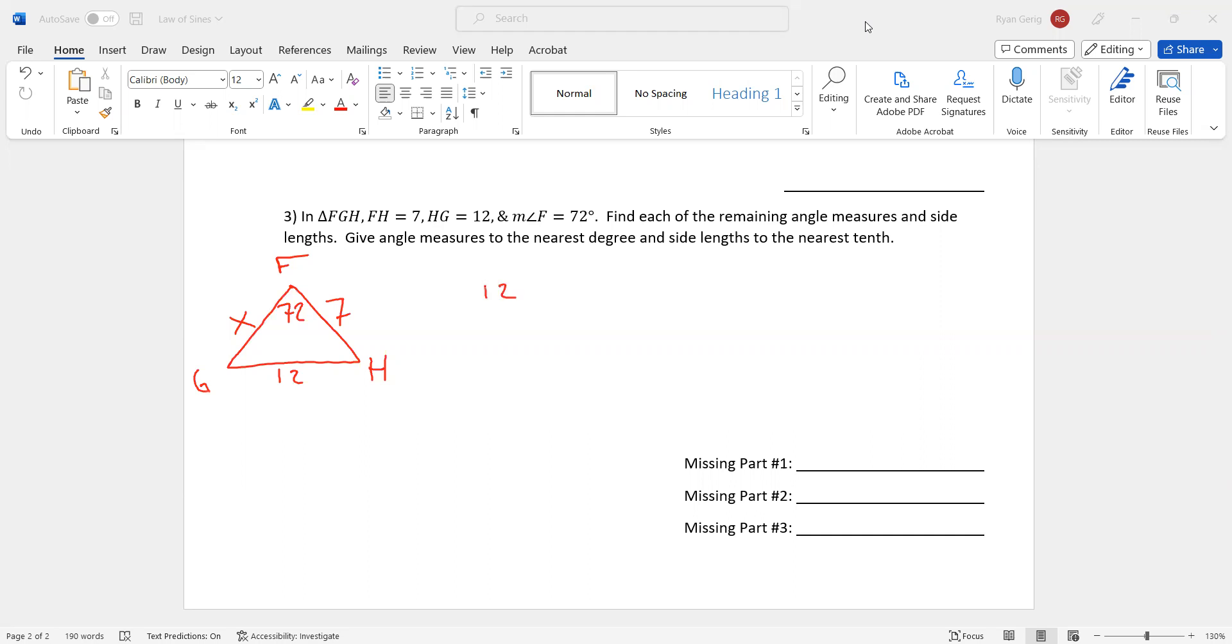If you tried setting up law of sines, you'd have 12 over the sine of 72 equals X over sine H. Well, you can't do anything with that, right? There's two variables. You can't do anything with that. That's what I was talking about. Sometimes it's not quite ready to go. This one I'm actually asking you to find all the missing parts. The part that you would find first, well, I have 12 and 72. Those go together. 12 over the sine of 72. They go together because they're across from each other. Well, what else do I know? I have 7 here. What's across from 7? Angle G. So that's what I have to find first. Missing part number 1 is angle G. It has to be. It's the only way to do this problem.